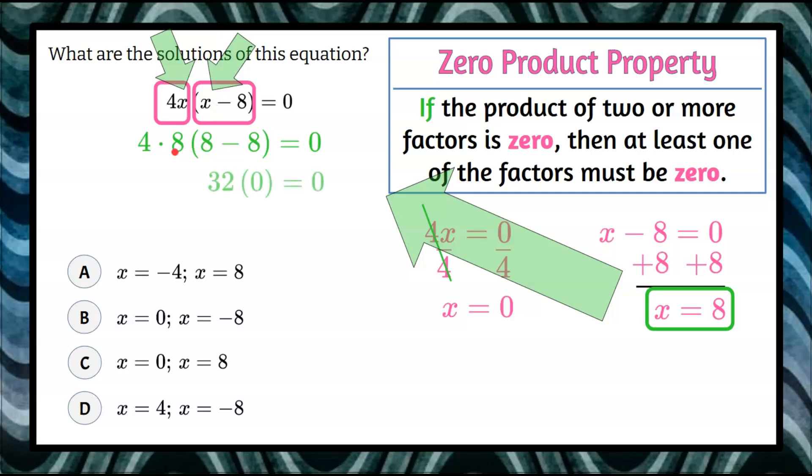4 times 8 is 32. 8 minus 8 is 0. The product of 32 and 0 is 0, and 0 does equal 0, so it checks.